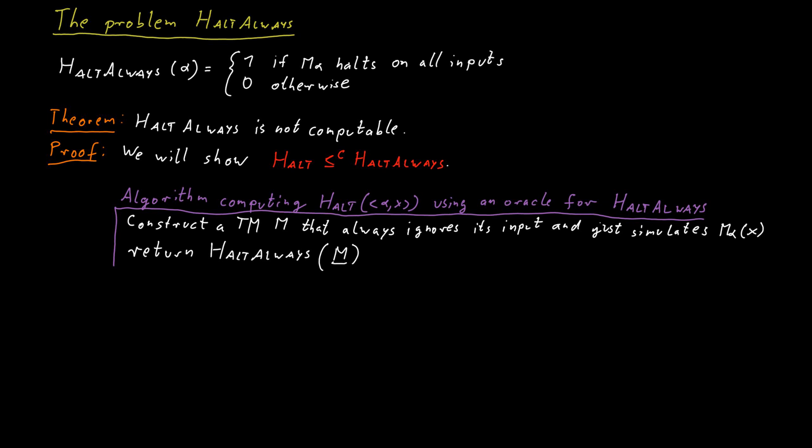But if the Oracle returns false and says no, actually there is an input for which this machine M does not terminate, it means that the machine doesn't terminate on any input, and it means in particular that the machine M_alpha does not terminate when it's given input X. So the right answer here is false. The answer we should give is exactly the answer we get from the Oracle, and so we just return the result that the Oracle gives us for this machine M.